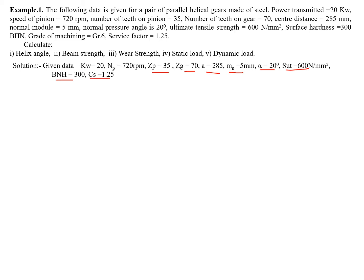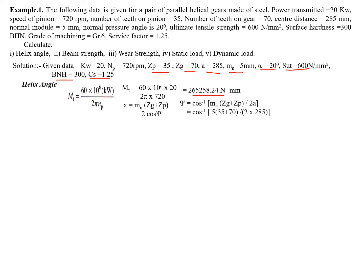Now, before finding helix angle, we need to find out the torque. Torque can be found with the help of this relation and we get the value of torque. To find out the helix angle, we need the center distance: a equals mn times (Zg plus Zp) divided by 2 times cos of psi. From this, psi equals 22.92 degrees. This is how the helix angle is known to us.